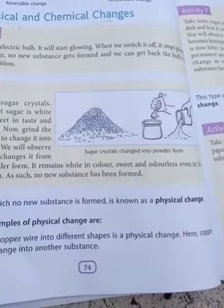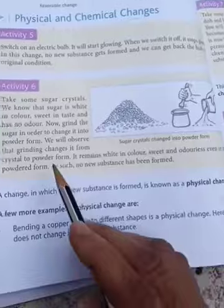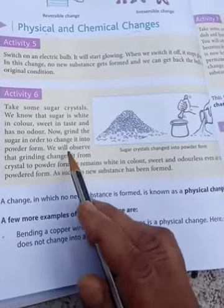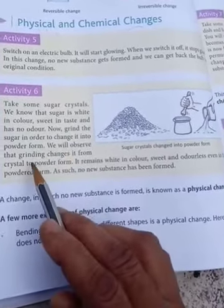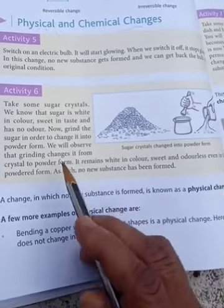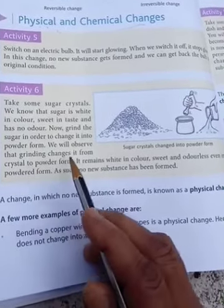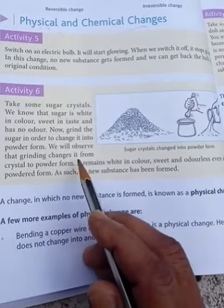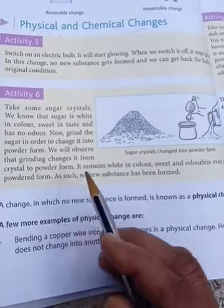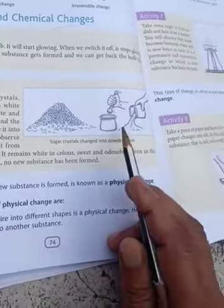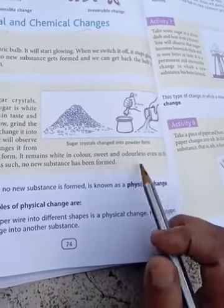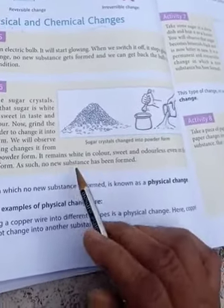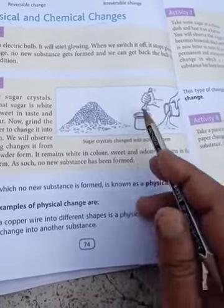This type of change is called a physical change. Grinding changes the sugar from crystalline to powder form. It remains white in color, sweet to taste, and odorless even in the powder form. As such, no new substance has formed. So grinding sugar is a physical change.